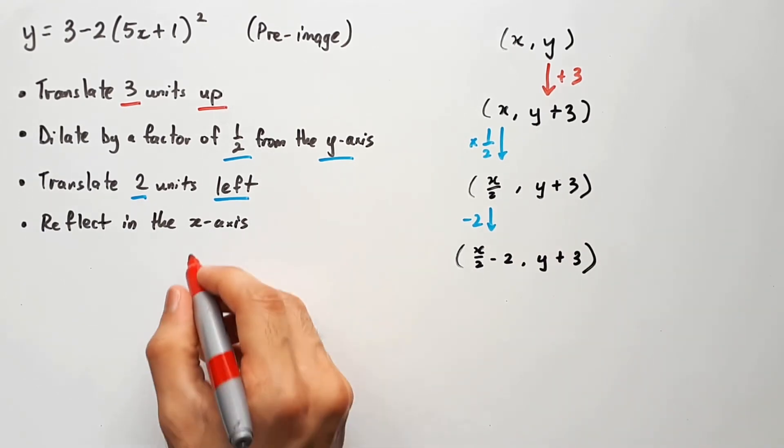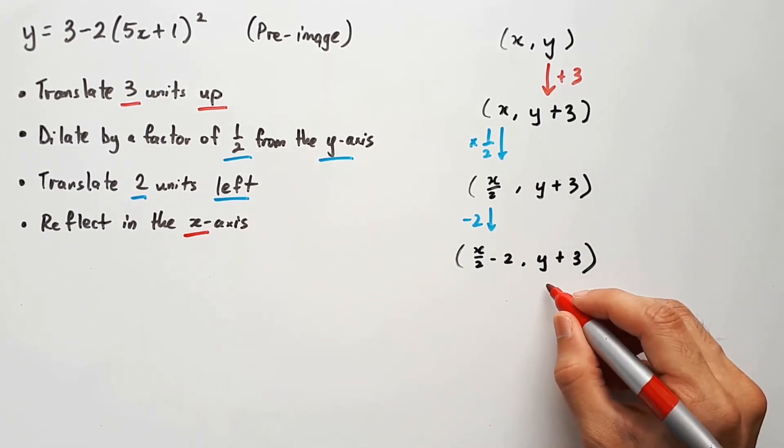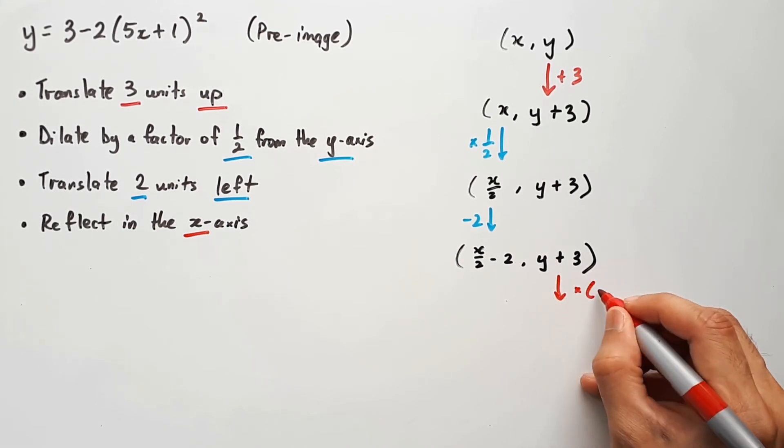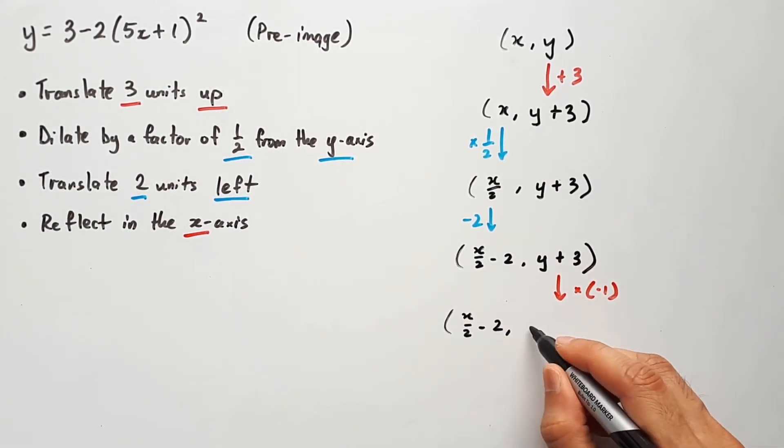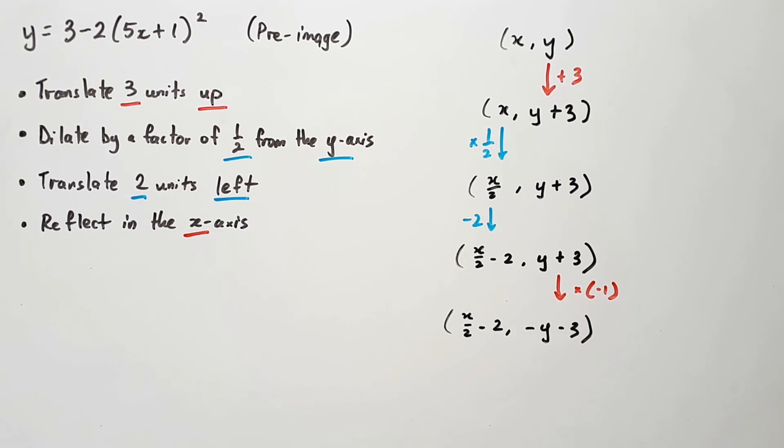And finally, reflect in the x-axis. So take the (y + 3) value and multiply that by negative 1. Don't just multiply the y by negative 1. And we have (x/2 - 2, -y - 3).